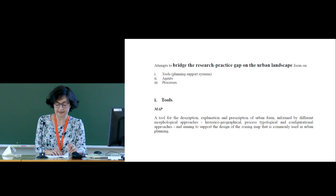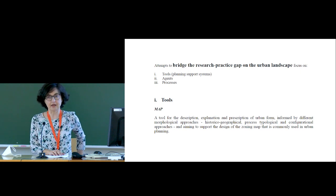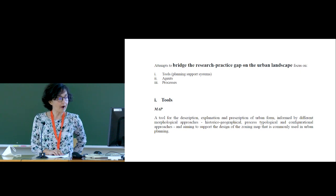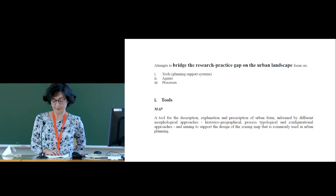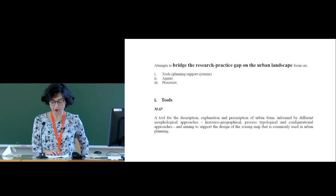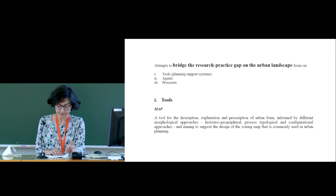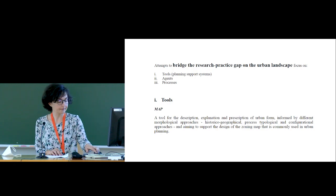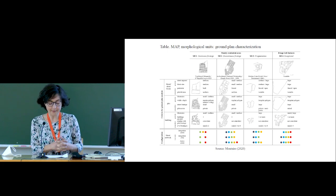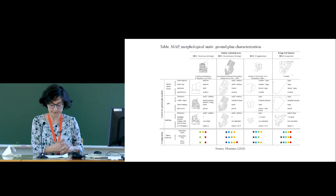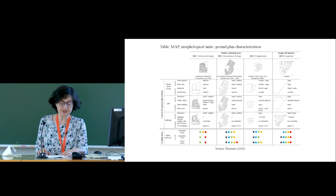MAP — Morphological Analysis and Prescriptions — is just an example of these tools that I have designed in my PhD. MAP is designed to describe and explain urban form and to prescribe rules for conservation and change. It brings together three morphological views: historical-geographical, process-typological, and configurational approaches. The main focus of MAP is on the town plan as a fundamental concept that defines the great options we make on the ground.